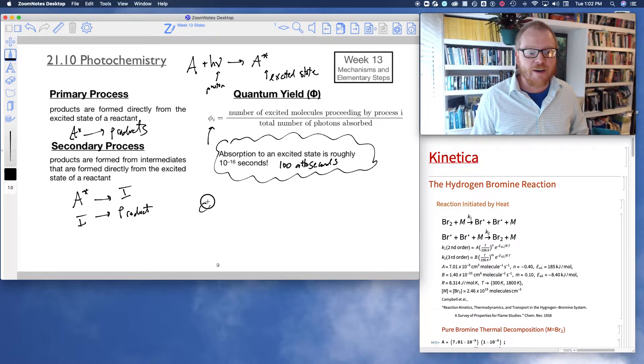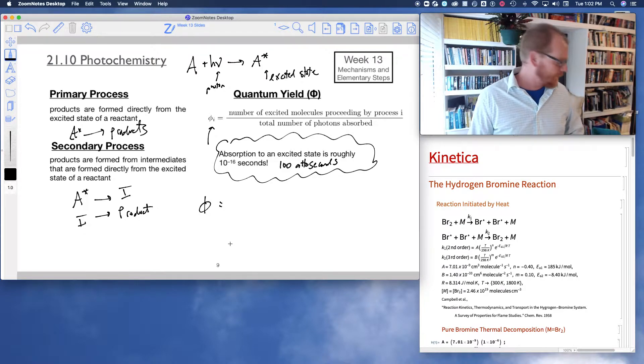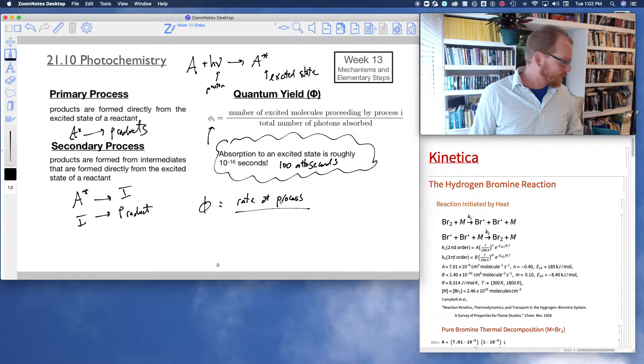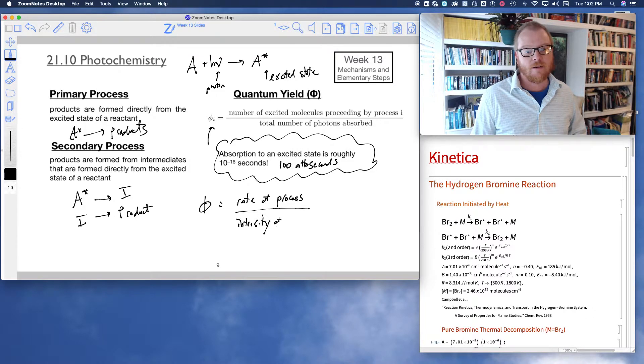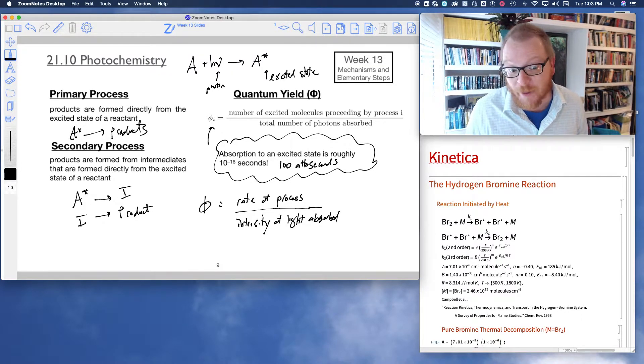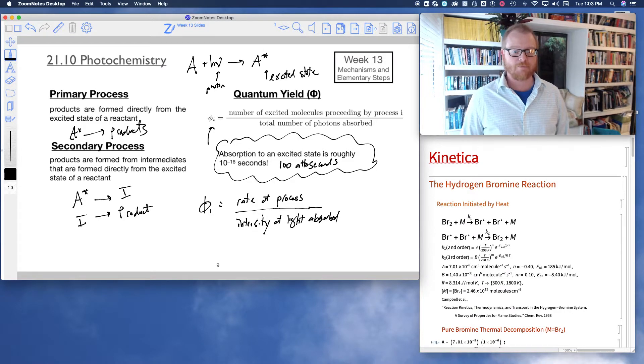So another way we can think of phi in terms of kinetics, there's another definition, and that would be the rate of a specific process divided by the intensity of light absorbed. So often these things are pretty difficult to calculate. We usually rely on people determining quantum yields for us.